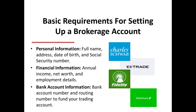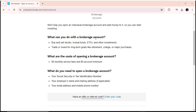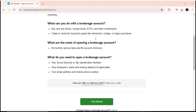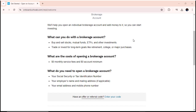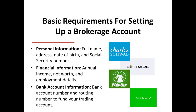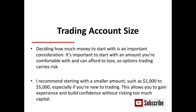Next, let's look at the basic requirements for setting up a brokerage account. You'll need your personal information: full name, address, date of birth, and social security number. You'll also need financial information including annual income, net worth, and employment details. Make sure you have your bank account number and routing number to fund your trading account. Additionally, you might be asked to verify your identity by uploading a copy of your ID or utility bill. This ensures the security of your account and compliance with regulatory requirements.